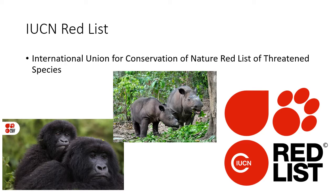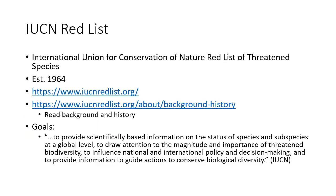This is the International Union for Conservation of Nature Red List of Threatened Species. Basically, the IUCN Red List provides the conservation status of all species on the planet, or at least all species as far as they've gotten to this date. It was established in 1964. I would encourage you to go onto their website and explore it — read through their background and history.